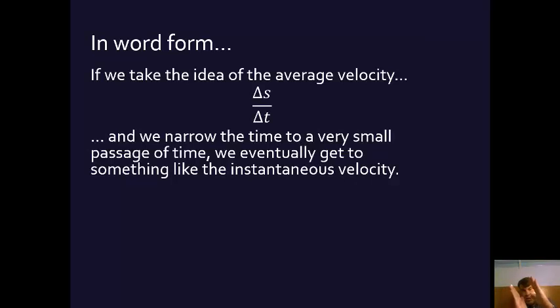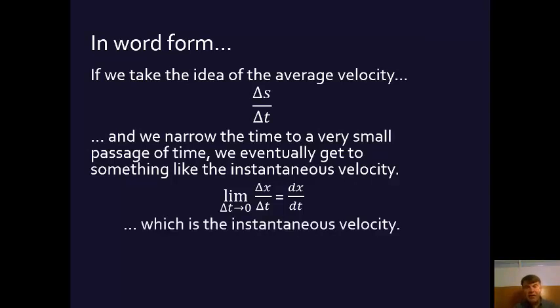If we made the change in distance and the change in time smaller and smaller and smaller, we could approach something like the instantaneous velocity. And so calculus uses language like this. The limit as the change in time approaches zero of the change in distance per change in time equals dx/dt, which is the instantaneous change in distance per time. Calculus gives you the tools to be able to do that.